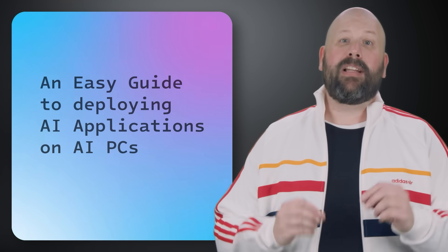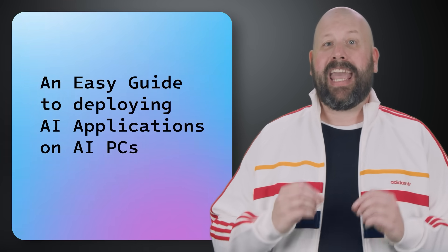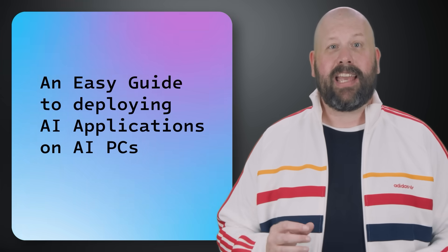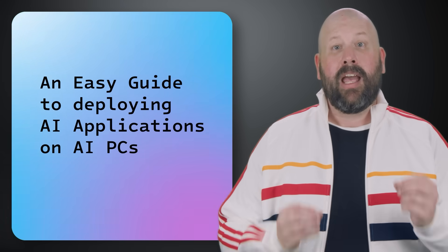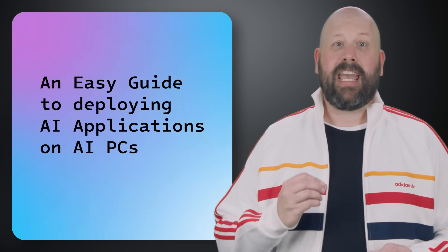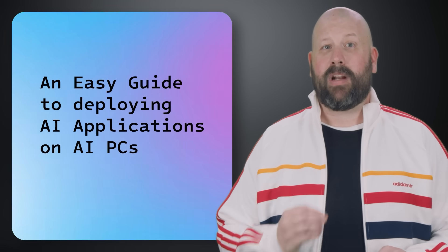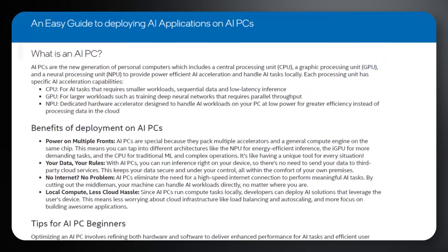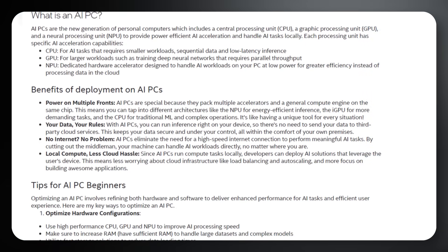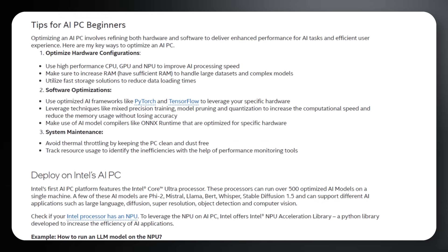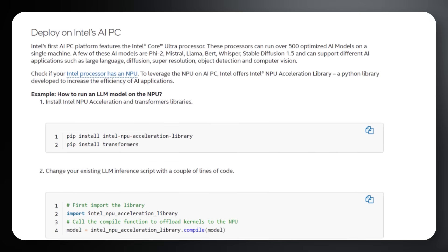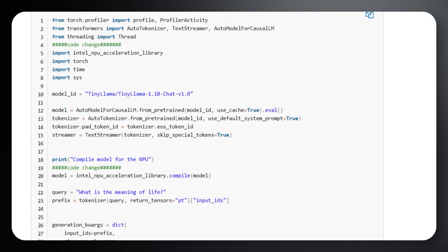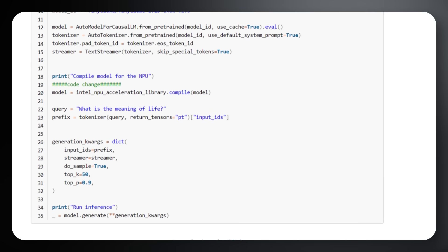Next up, we have released a detailed guide on deploying AI applications using advanced AI PCs featuring Intel Core processors and Intel Arc graphics. This guide outlines how these components work together to boost AI development, supported by Intel's OneAPI toolkit for optimized performance. It provides practical tips for developers on enhancing application efficiency and includes real-world use cases from various sectors, demonstrating the technology's versatility. The guide also offers recommendations for maximizing hardware potential and troubleshooting common issues.